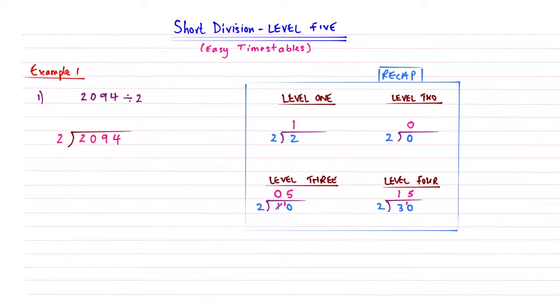So let's go ahead. 2s into 2 go once. 2s into 0, well, this is a Level 2 skill, so 2 doesn't go in, so it becomes a 0. 2s into 9, well, 2 times 4 is 8, so it's 4 times, remainder 1, and 2s into 14 go 7. So that's example 1. Hopefully, you can see how all the four little skills, the four levels, get combined into the first example.